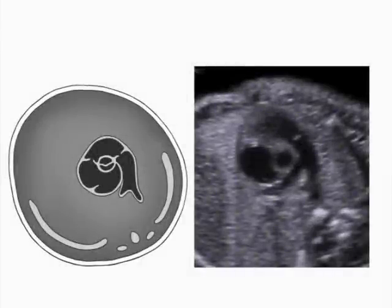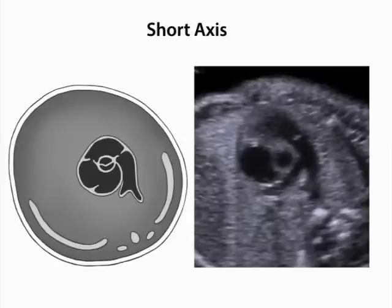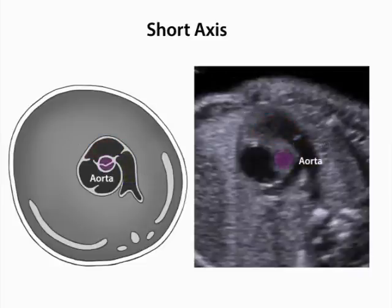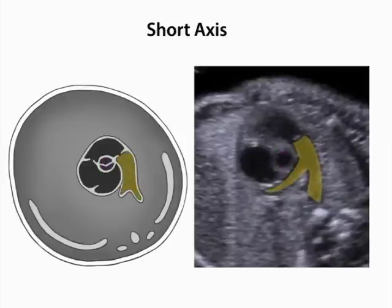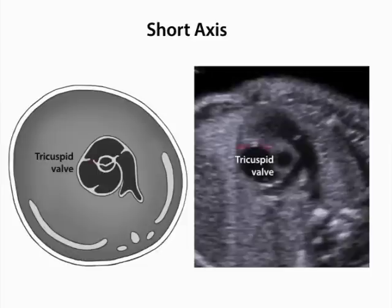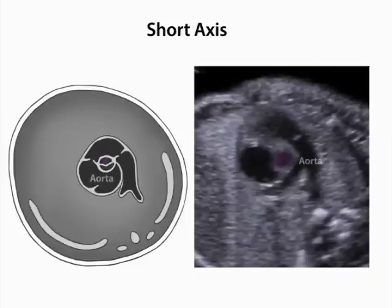Each of the structures seen in the right ventricular outflow track view is also visible in the short axis view of the great arteries, which is shown here. These views are equivalent, although obtained at slightly different orientations. In the short axis view, the right atrium, right ventricle, and main pulmonary artery are visible encircling the aortic root. The main pulmonary artery branches into the right and left pulmonary arteries. The tricuspid valve and pulmonic valve are also visible in this image. Note that the aortic root and pulmonary artery are similar in size.